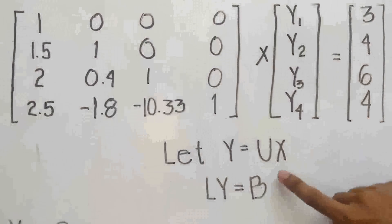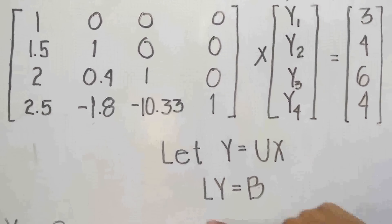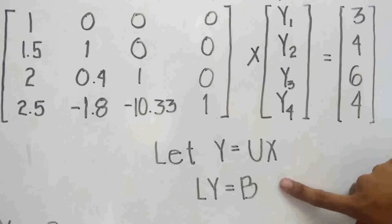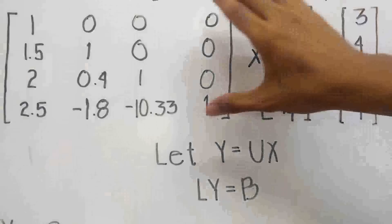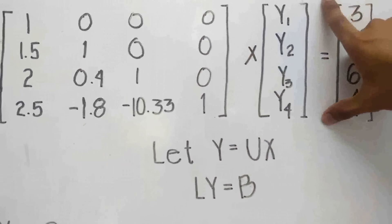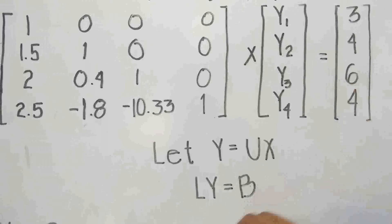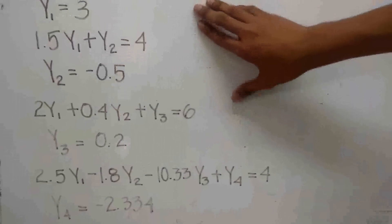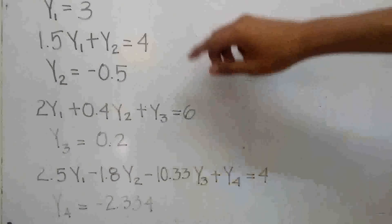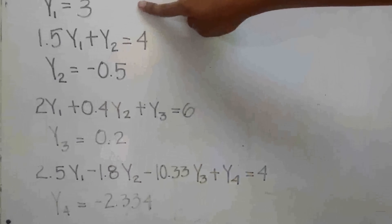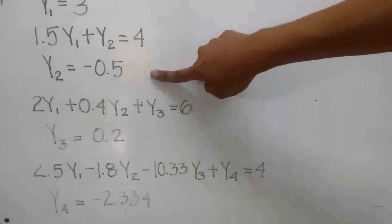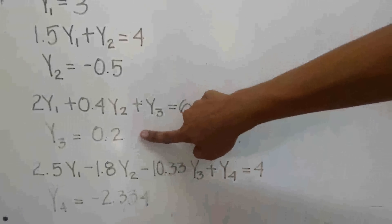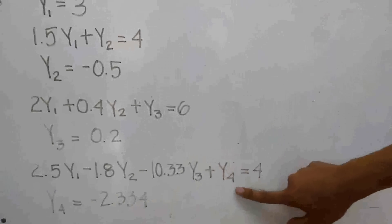Letting Y equal to the upper triangular matrix times X, we can say that LY is equal to B. We will now multiply the lower triangular matrix times the matrix Y equal to the constant matrix B. If we multiply the lower triangular matrix and the matrix Y, we will obtain a new set of linear equations. From it, we can easily say that Y sub 1 is equal to 3. Substituting Y sub 1, we get Y sub 2 is equal to negative 0.5. Substituting Y sub 1 and Y sub 2, Y sub 3 is equal to 0.2, and Y sub 4 is equal to negative 2.334.